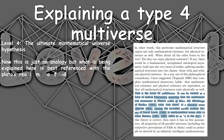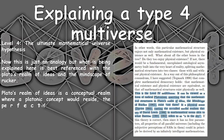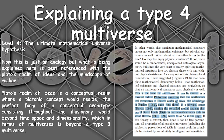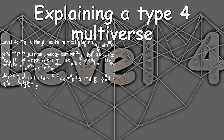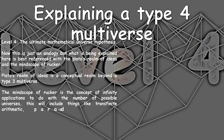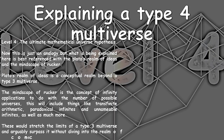This is just an analogy of Tegmark — not the actual description of a Type 4 multiverse, but useful for getting some idea of its size. Plato's realm of ideas is a conceptual realm where Platonic concepts would reside — a perfect form of conceptual archetype, consisting throughout an illusionary world beyond space, time, and dimensionality, which in terms of multiverses is easily beyond a Type 3 multiverse on its own. The Mindscape of Rucker is a concept of infinity application, with the number of possibilities being transfinite arithmetic — paradoxical infinities, unnamed infinities, and much more. This would stretch the limit of a Type 3 multiverse, and arguably surpass it, diving into the realm of conceptuality.